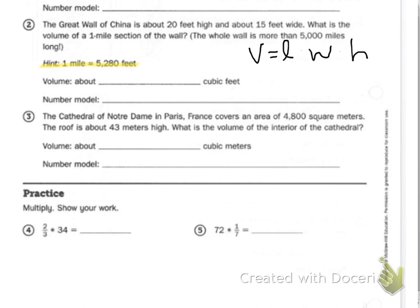Three is the Cathedral of Notre Dame in Paris, France, covers an area of 4,800 square meters. That's your base. The roof is about 43 meters high. What is the volume of the interior of the cathedral? So just like number one,